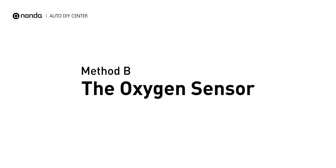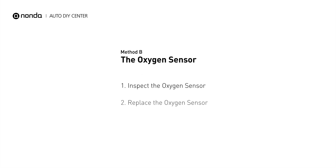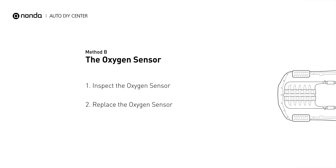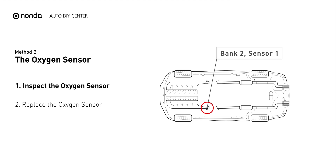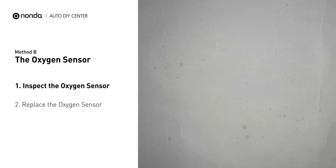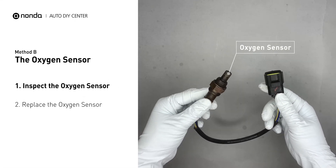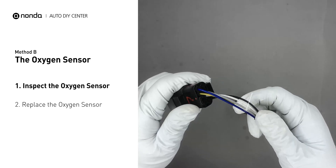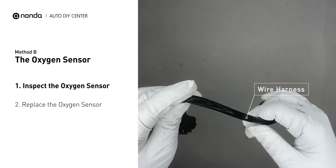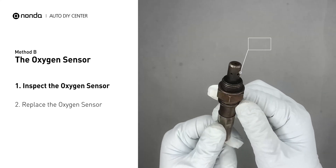Method B: The Oxygen Sensor. This oxygen sensor is located right before the catalytic converter. Bank 2 is on the side with cylinder number 2. Sensor number 1 is usually the one in the exhaust manifold. Visually check the oxygen sensor's electrical connections, wire harness, and metal tabs for any damages.